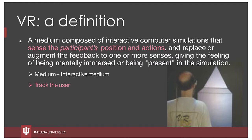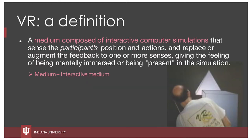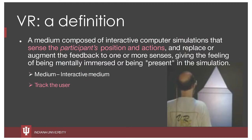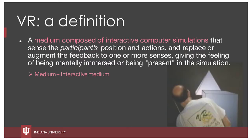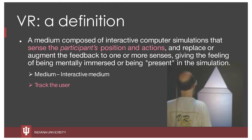The next component is sensing the participant's position and actions — we'll call that tracking the user. If you watch the picture in the lower right, you'll see my colleague takes two different viewpoints. When looking at these shapes, you see what looks like a triangle, a trapezoid, and a square, but as he moves around, the actual relationship between those objects is revealed.